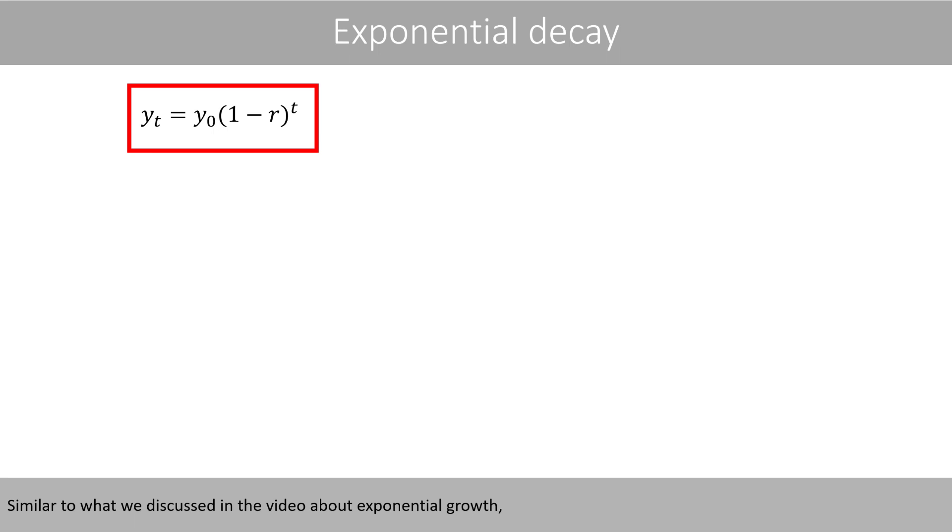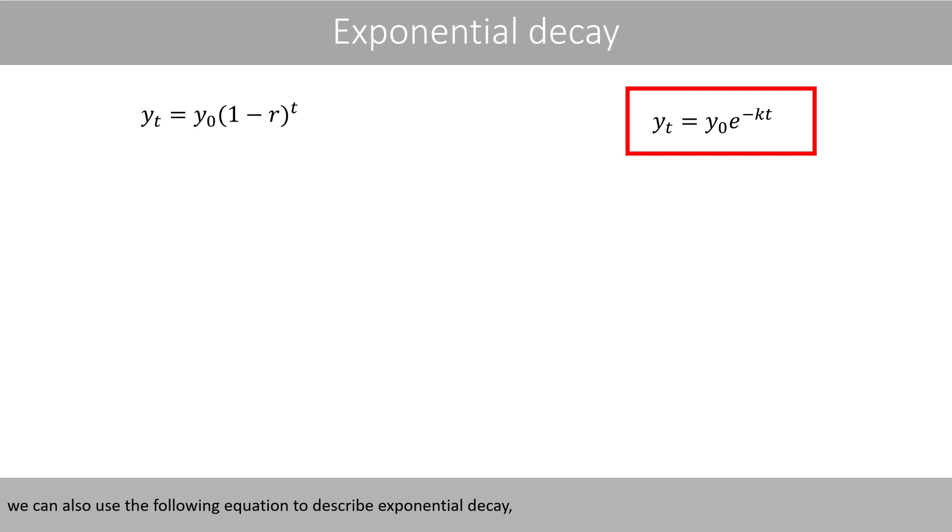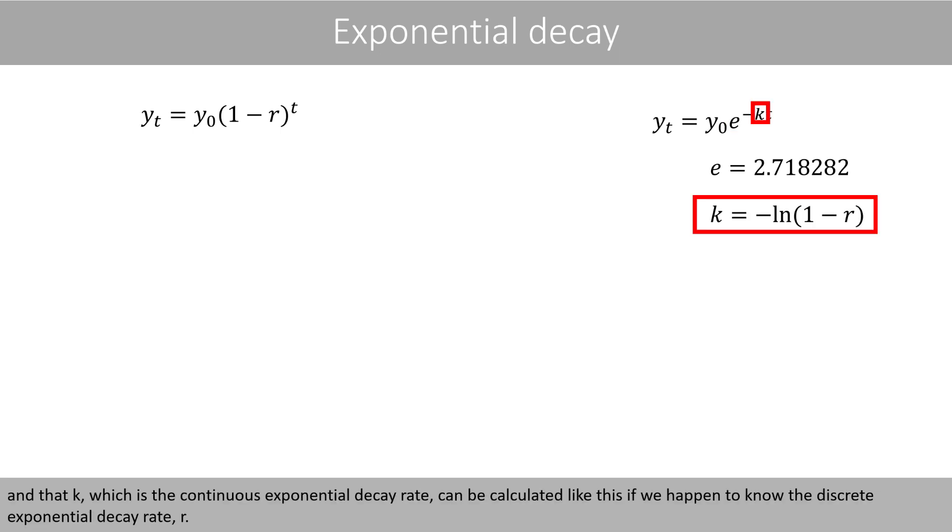Similar to what we discussed in the video about exponential growth, we can use the following equation to describe exponential decay, where we now have a minus sign in front of k. Remember that e is the Euler's number, and that k, which is the continuous exponential decay rate, can be calculated like this if we happen to know the discrete exponential decay rate, r.